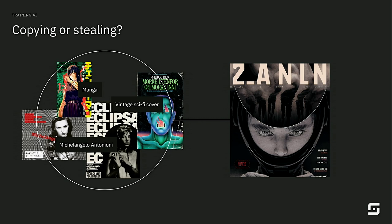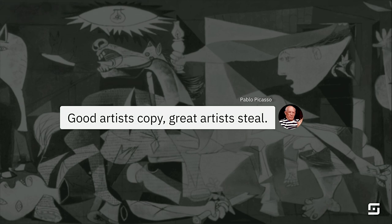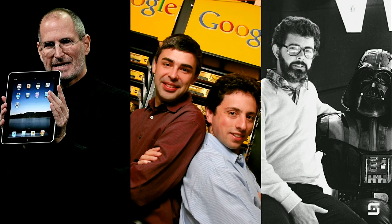This image was created with a few different attributes in the prompt. You had an artist named Michelangelo, vintage sci-fi covers, and manga. Think about it like a search engine — we're taking all the patterns of those different styles and creating artwork. If you look at any one of these individual attributes, you probably won't be able to find artwork that looks like that. So the good question is: is this copying or stealing? It reminded me of a quote by Steve Jobs — who actually stole it from Pablo Picasso, who probably stole it from somebody else. The quote says, good artists copy, and great artists steal.